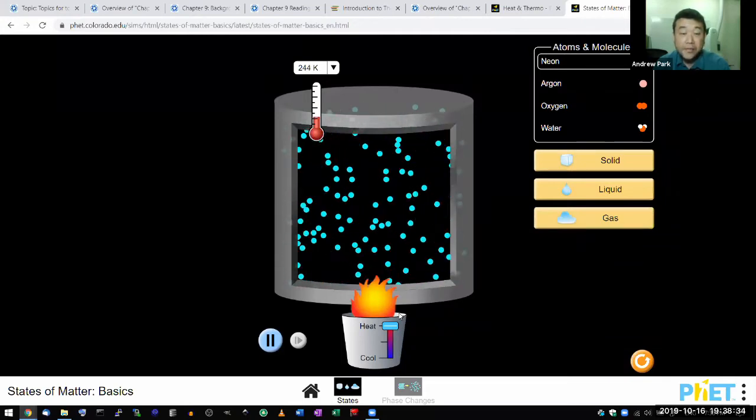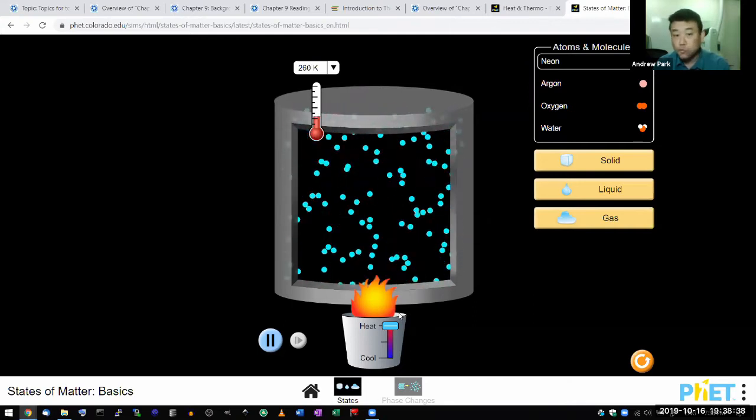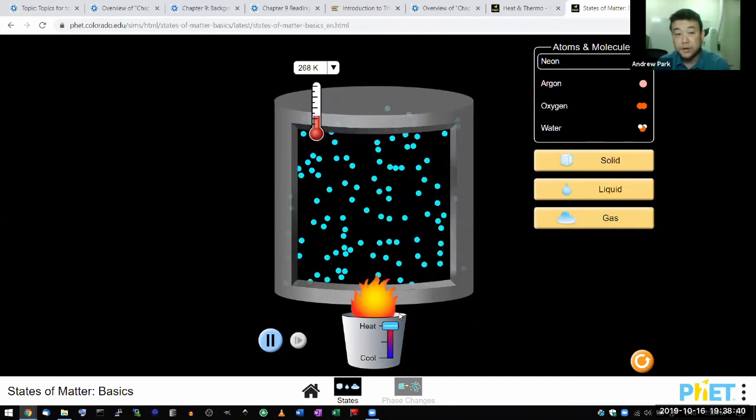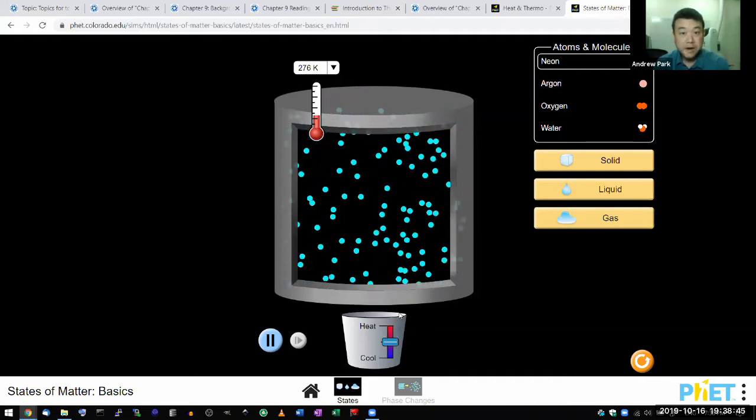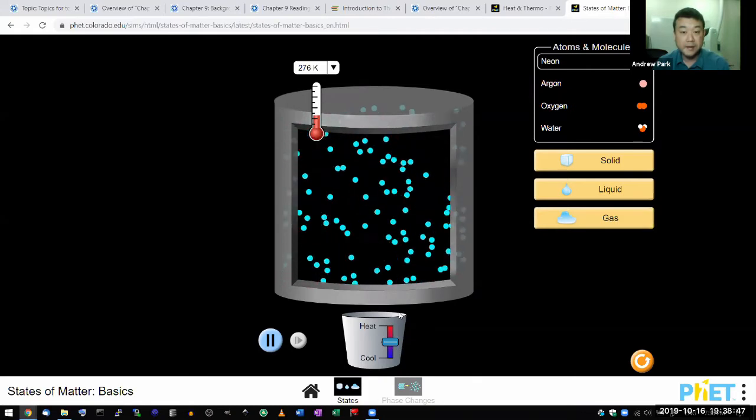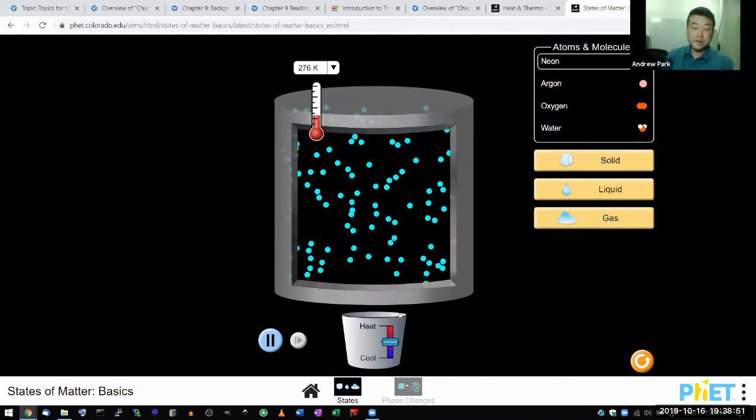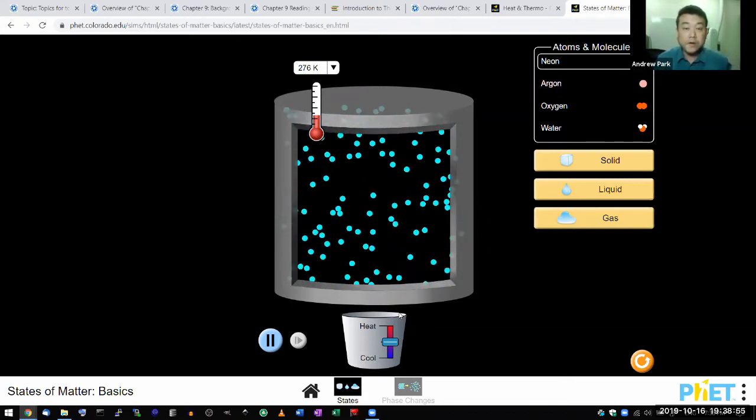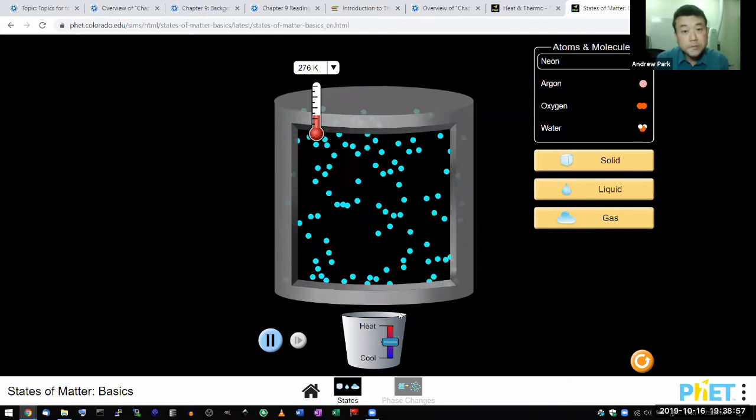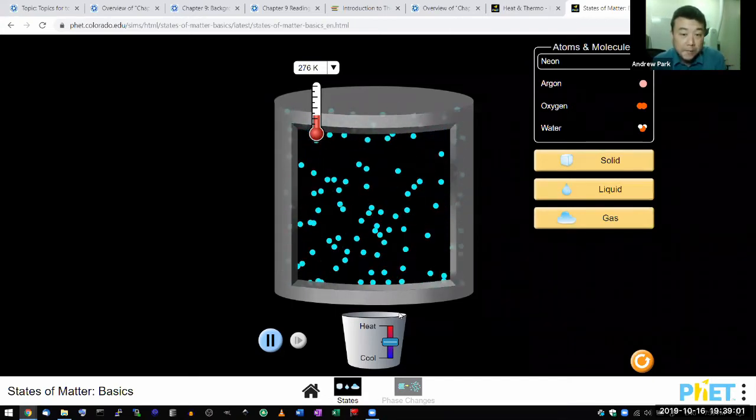So other than the temperature increasing, I hope you are noticing one other thing that's happening with the microscopic gas atoms. What's happening is that they're moving faster, and that's frankly the mechanical meaning of thermal energy. One description of thermal energy you can give is microscopic kinetic energy.